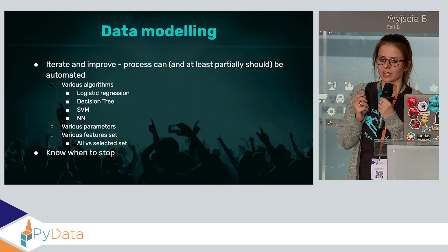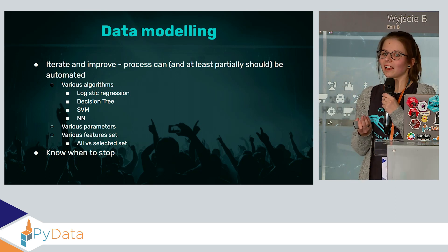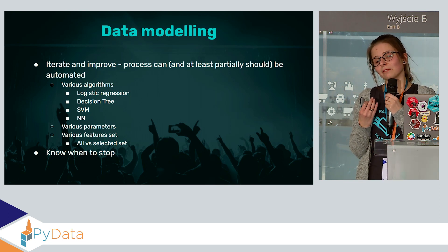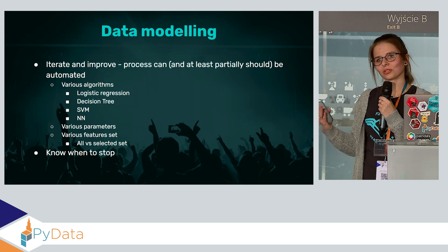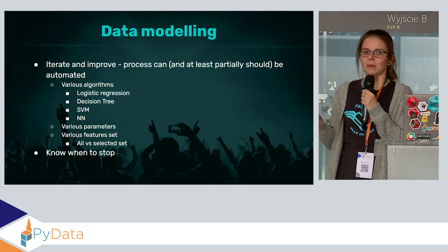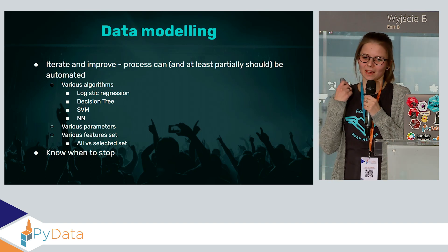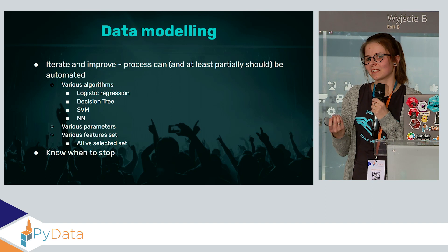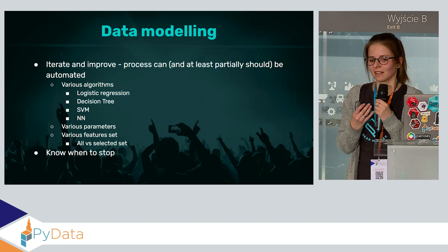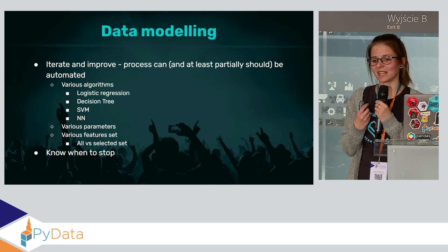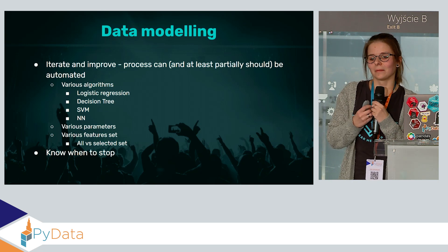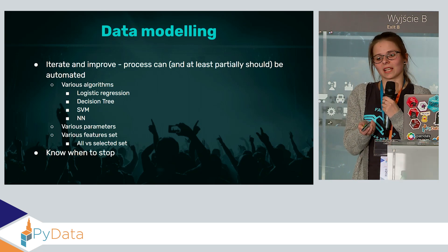Another important thing is knowing when to stop. We can spend a lot of time modeling and testing and trying to get insight from the data, but sometimes the information is just not there. Our data is great — we believe in it and prepared it the best way we can — but we just cannot predict what we'd like to based on it. There's nothing wrong with the data and nothing wrong with us. We have to know when to say stop and move to a different project, or think of other features.